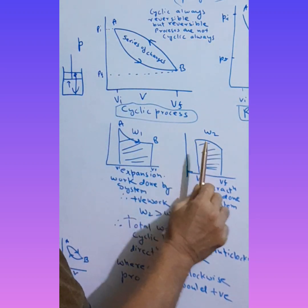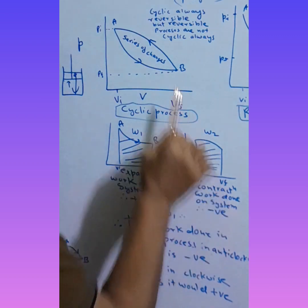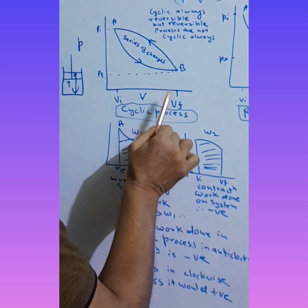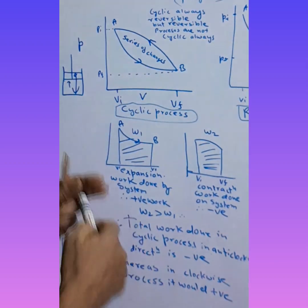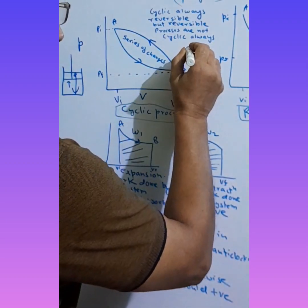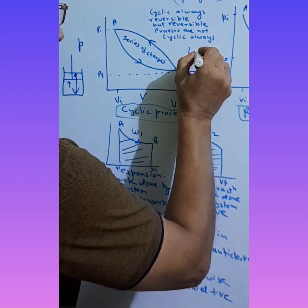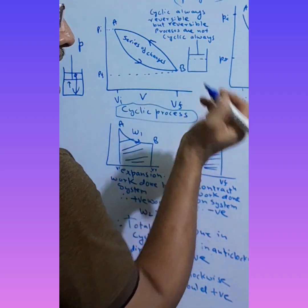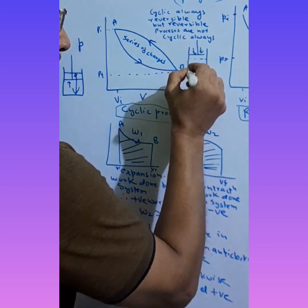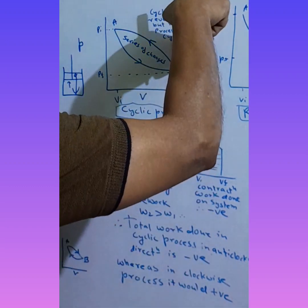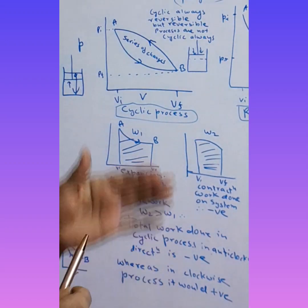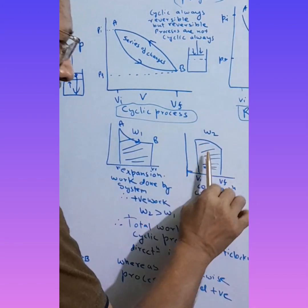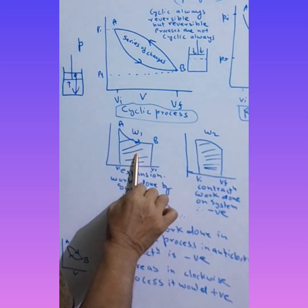Now let's talk about the path from B to A. This is the area covered in that process. What is happening here is the piston, which was at a larger position, has now moved back. External pressure is acting on it, so work is being done on the system. Whenever work is done on the system in physics, it is always negative. So this is negative work.